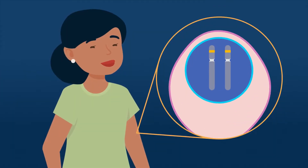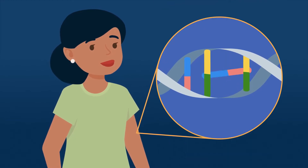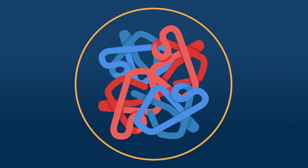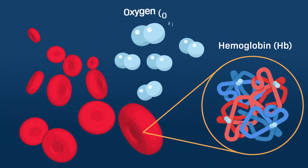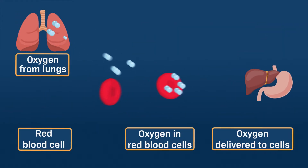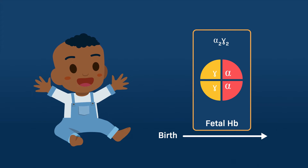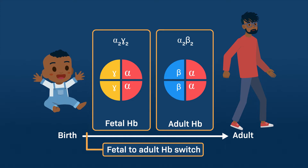Despite a complex array of disease symptoms and severity, sickle cell anemia has a relatively simple genetic background. In vertebrates, a protein in red blood cells called hemoglobin is responsible for transporting oxygen from the lungs to all other organs. Around the time of birth, there is a switch from the fetal form of hemoglobin, made of 2 alpha and 2 gamma chains, to its adult form, composed of 2 alpha and 2 beta chains.